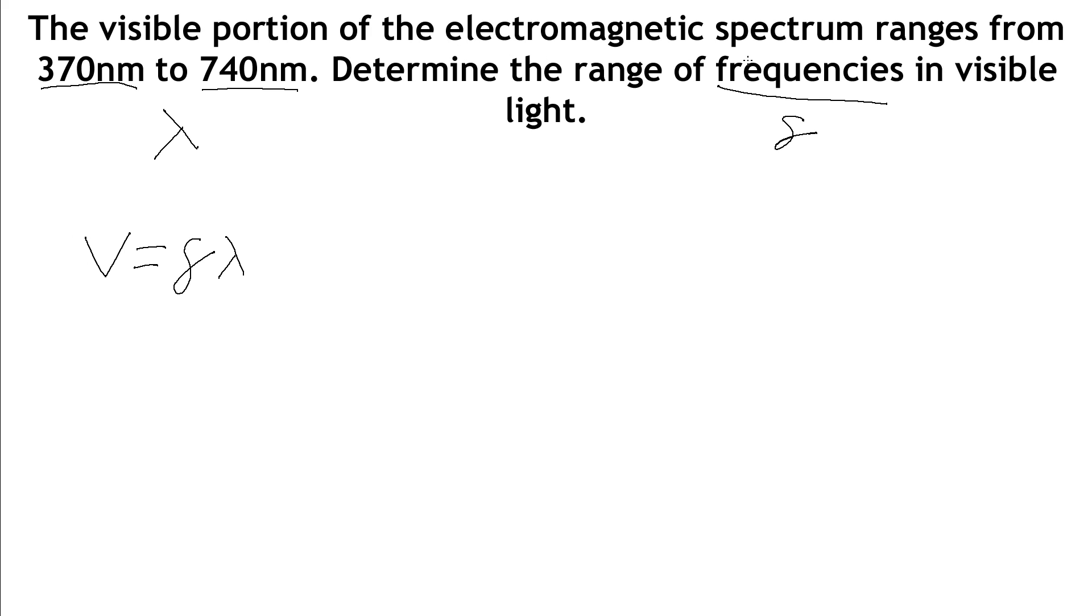All we need is the wave speed. For the electromagnetic spectrum, the wave speed is the speed of light. So v is 3 times 10 to the 8 meters per second. If we want to find the frequency, that's the wave speed divided by lambda.